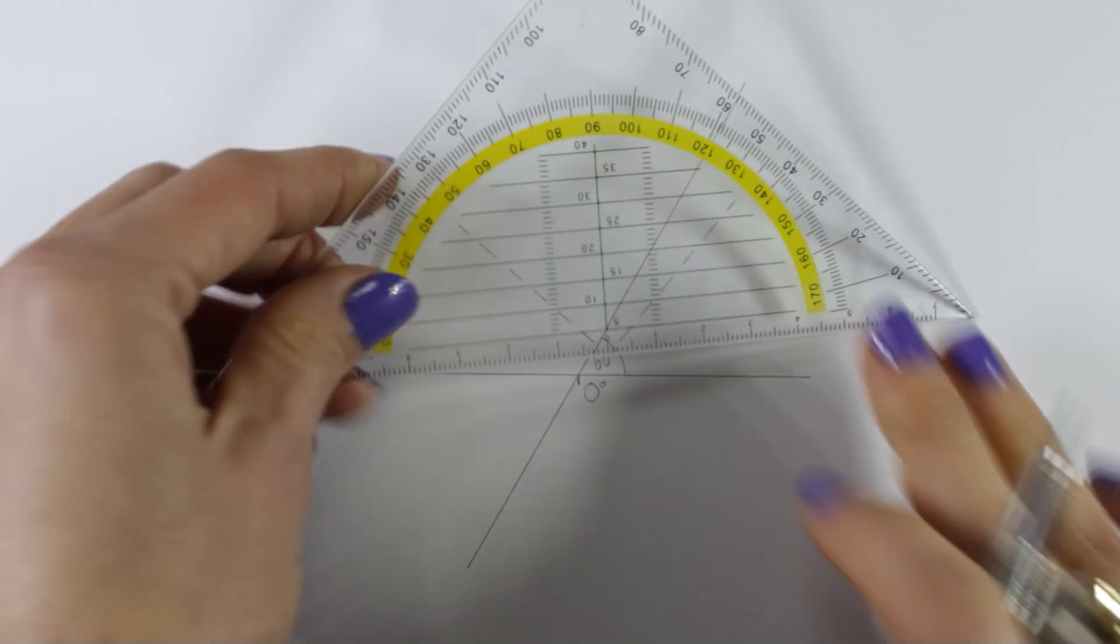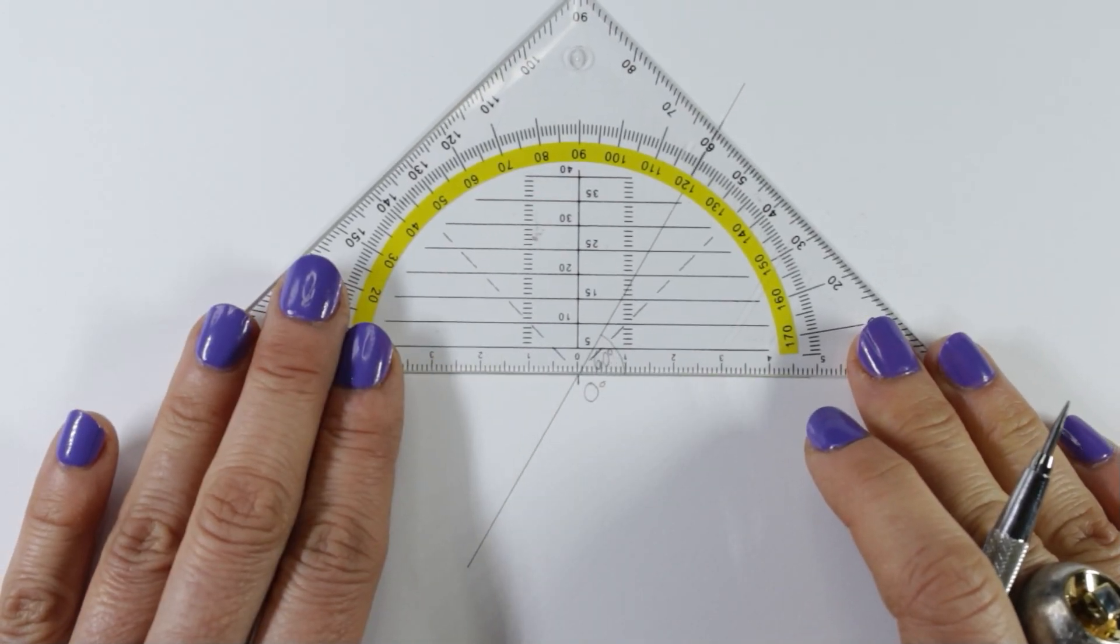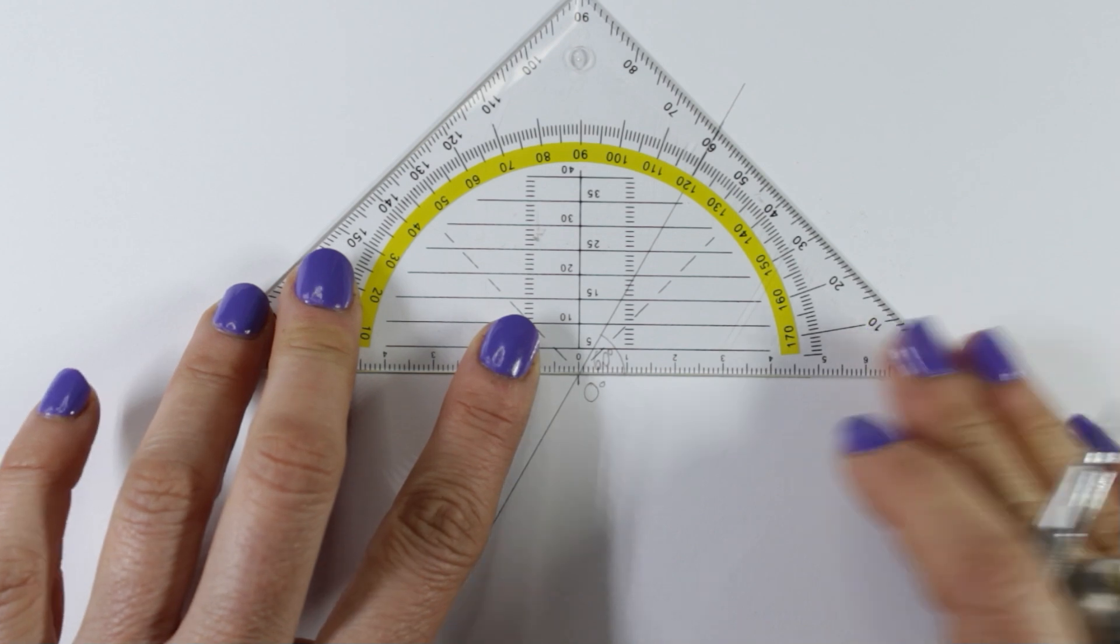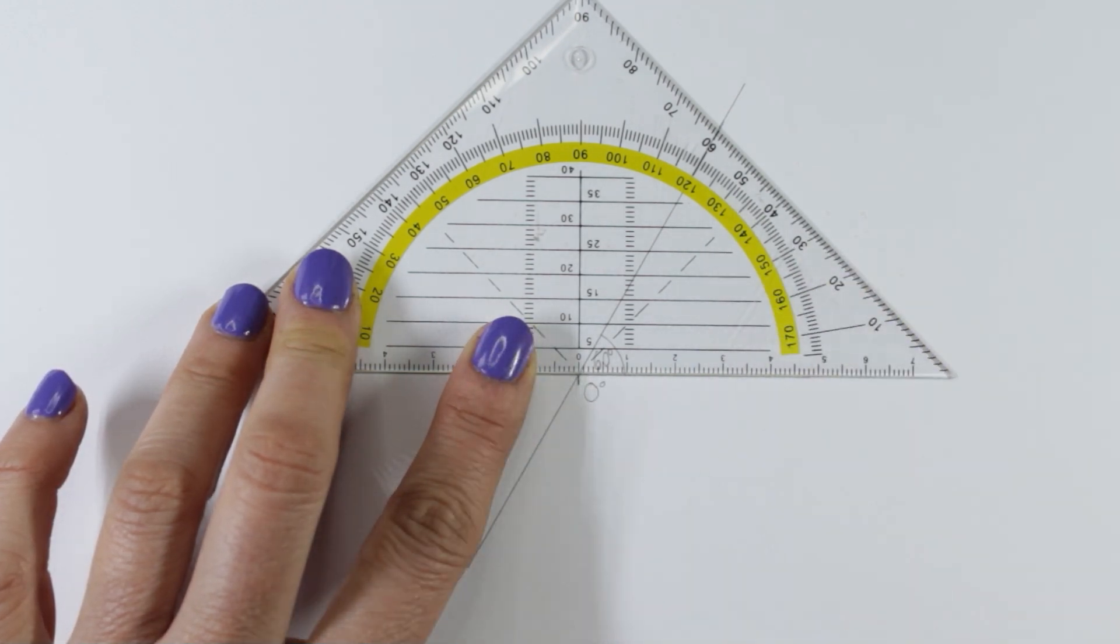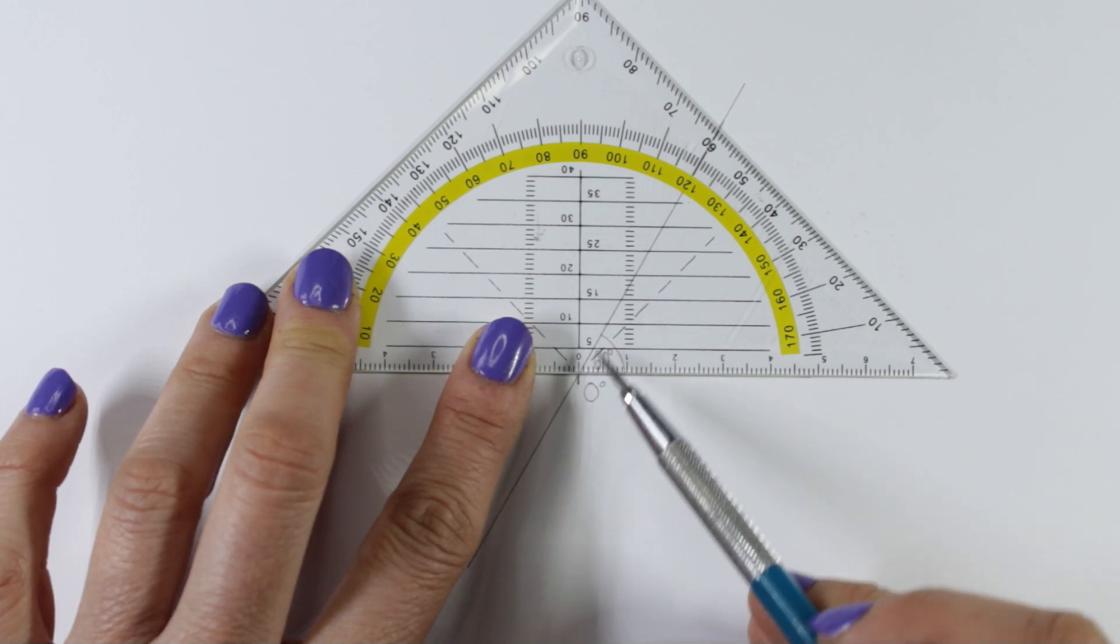If you would like to measure the degrees, you align your triangle with the horizontal line and point zero. Follow the line to the edge of the triangle and read the scale.